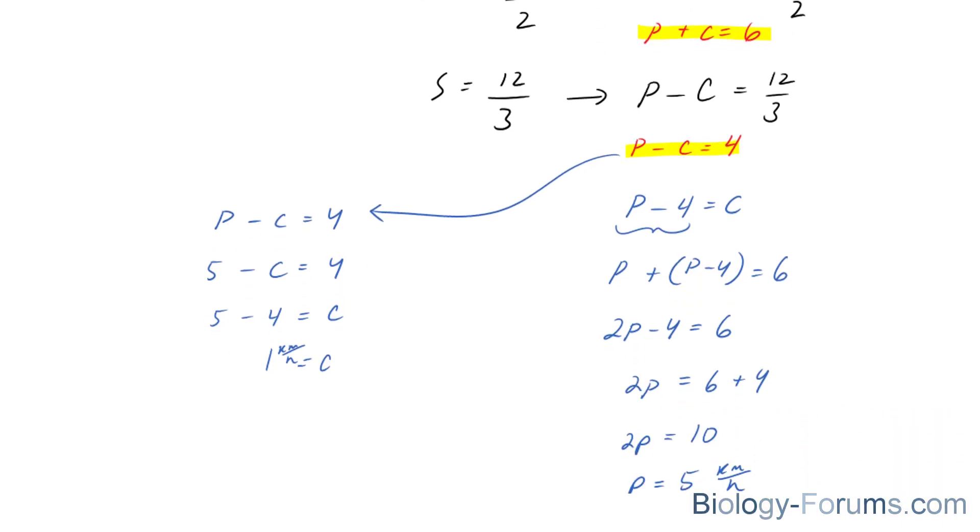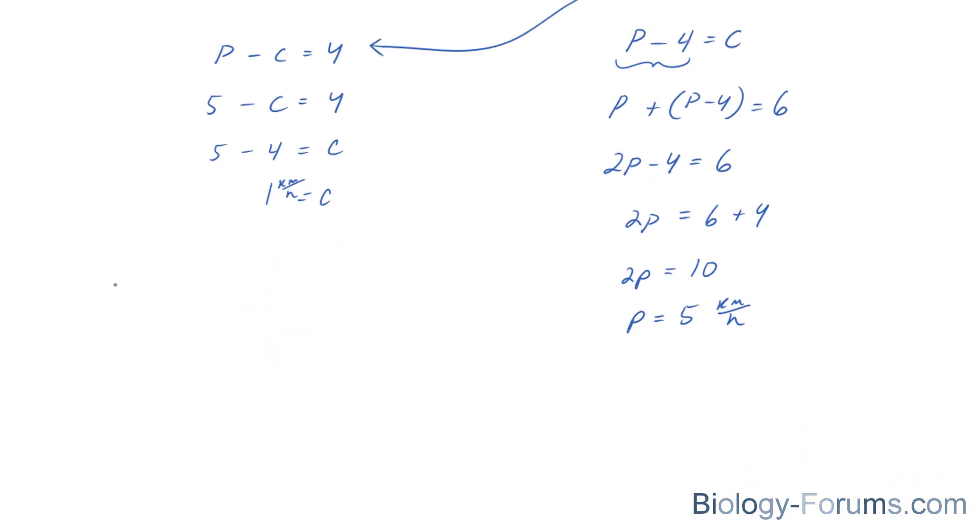So let's conclude. Therefore, his personal speed is 5 kilometers an hour, and the speed of the current is 1 kilometer per hour.